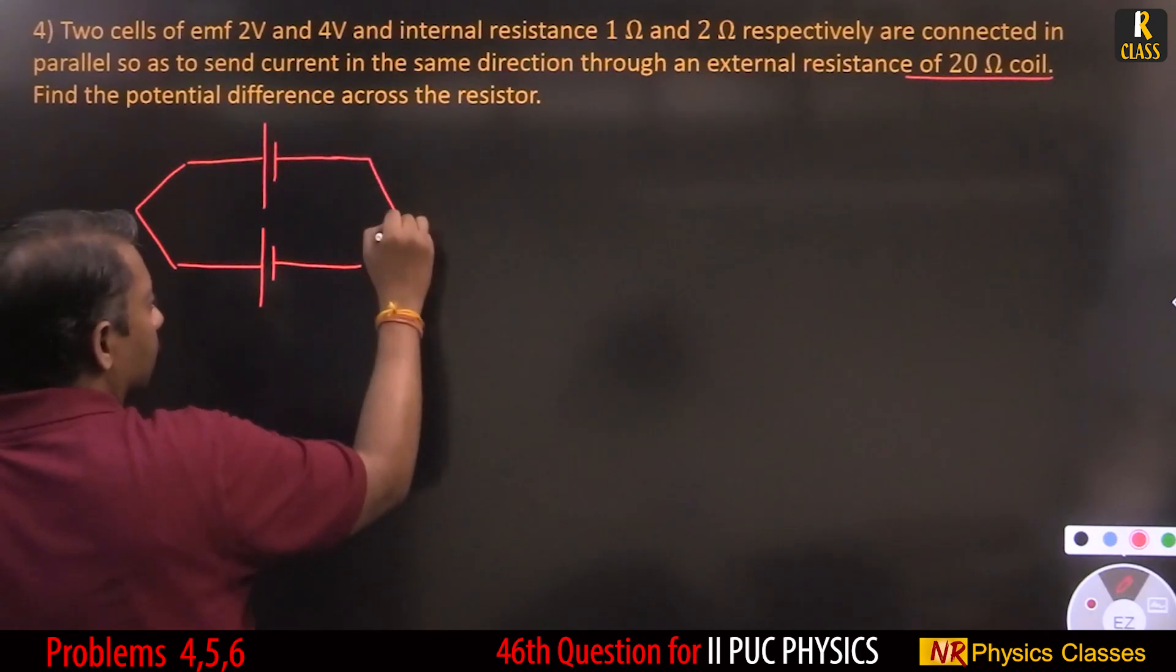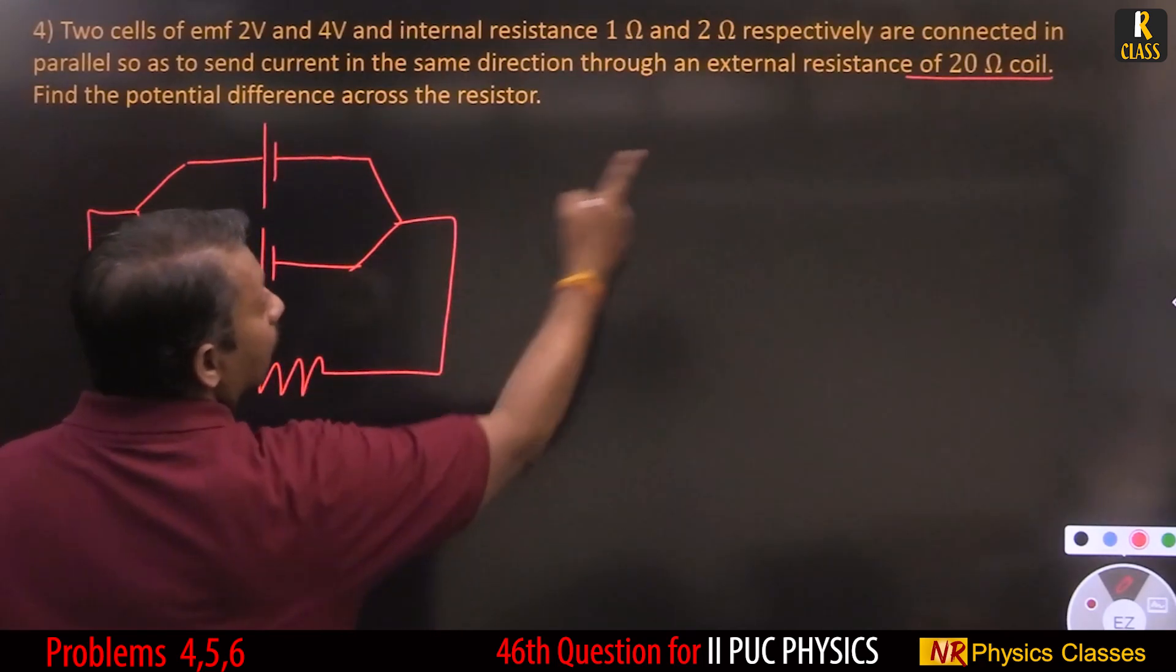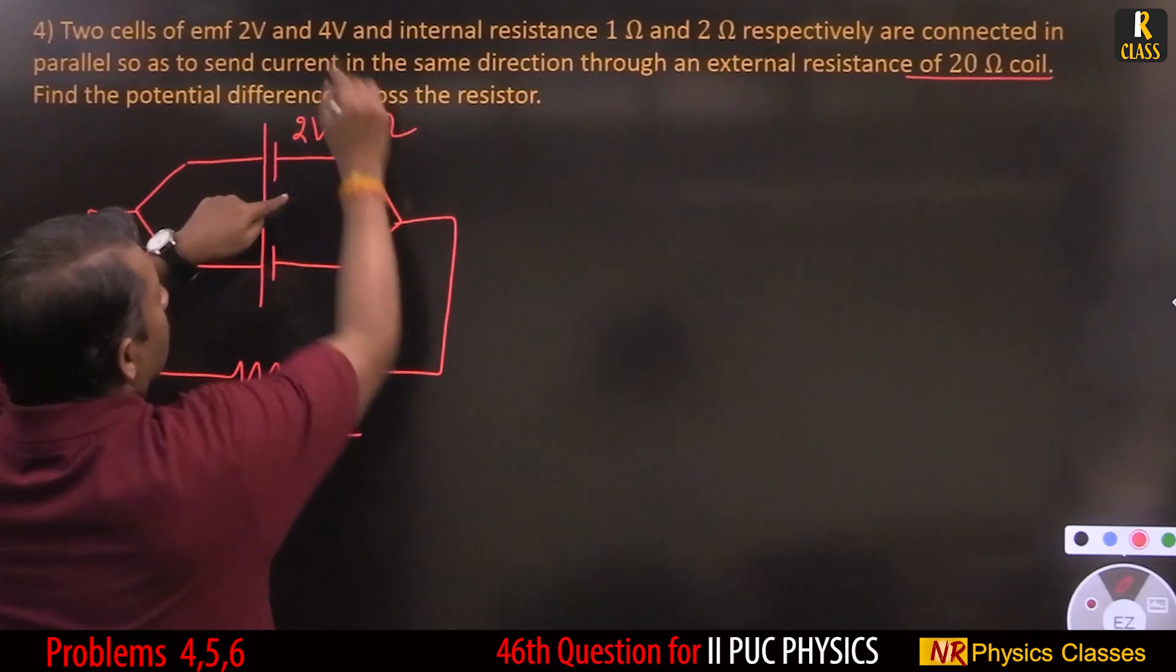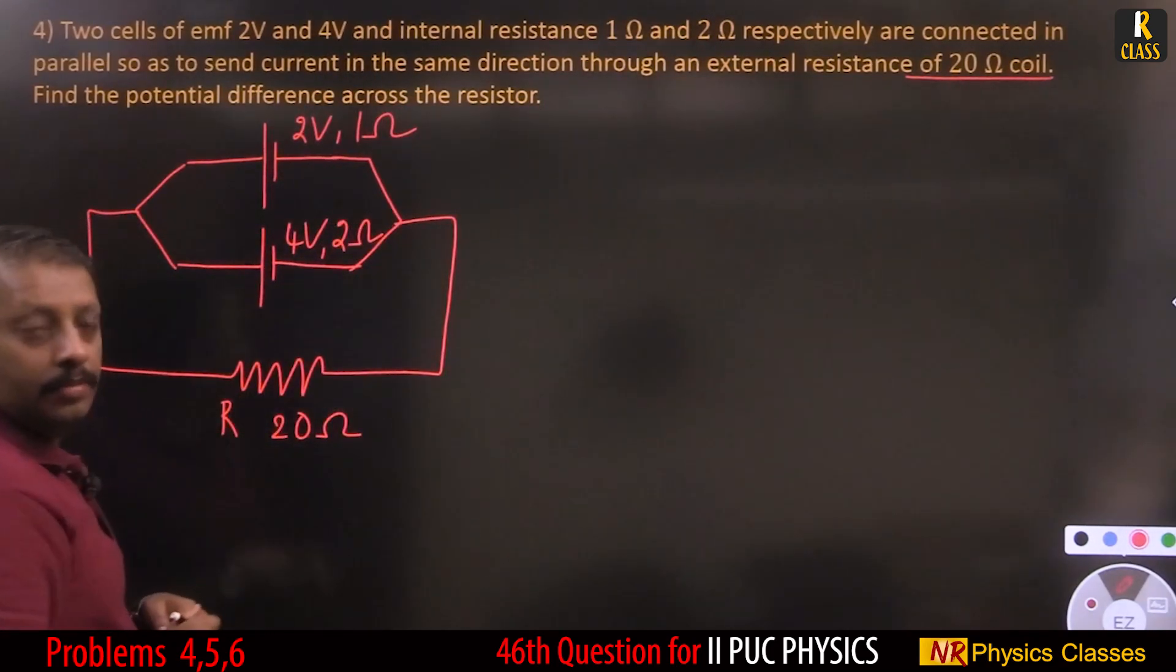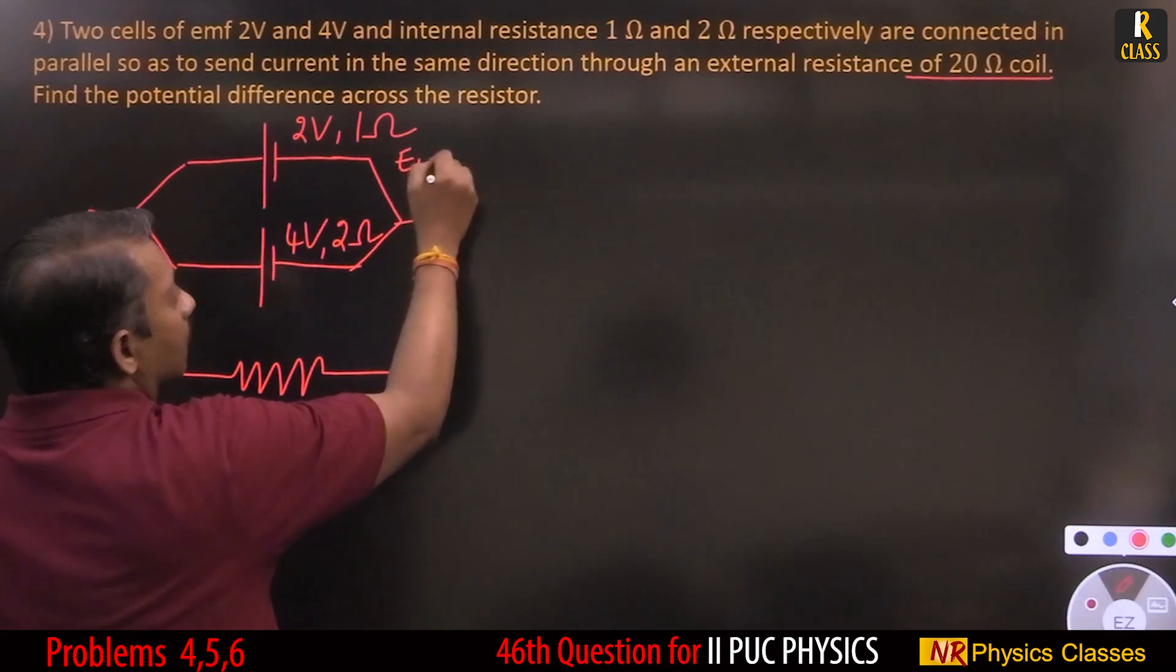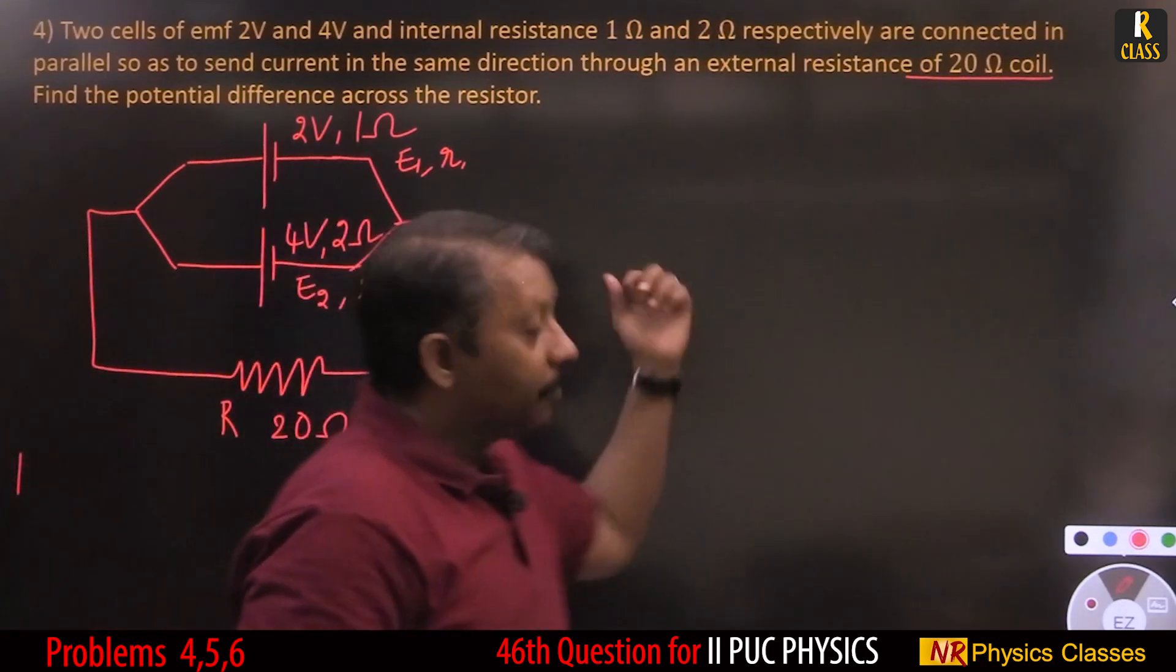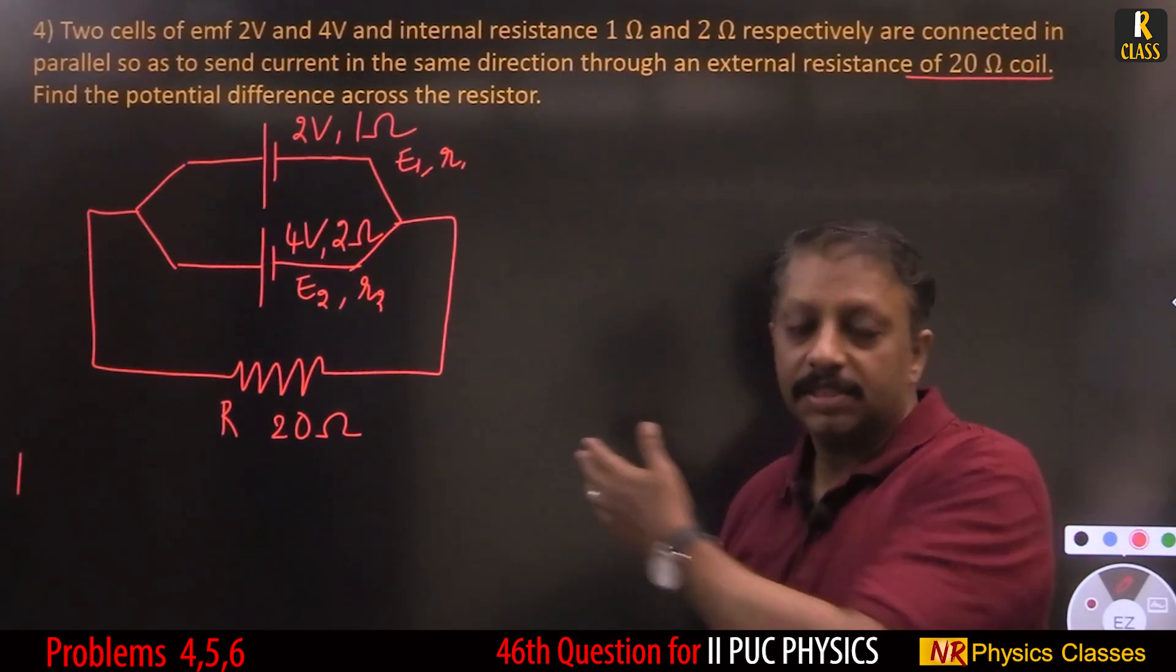The circuit should be like this and these two are connected across an external resistance of 20 ohm. First cell is 2 volt, 1 ohm - let this be E1, R1. Second is 4 volt, 2 ohm - E2, R2. We have to find potential difference, so we need current. This can be solved in two or three methods.